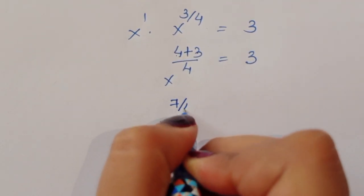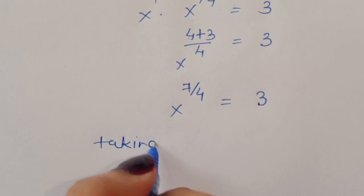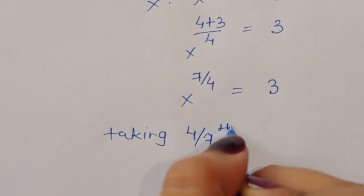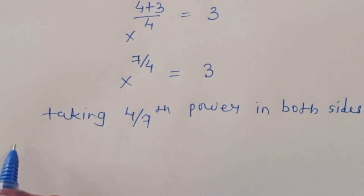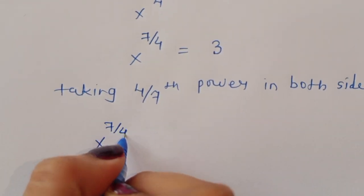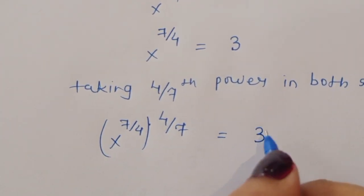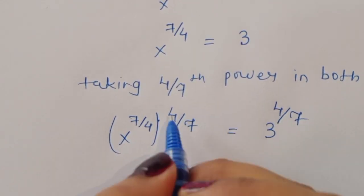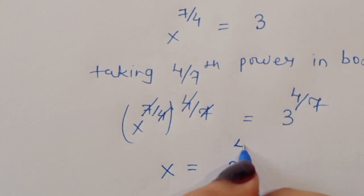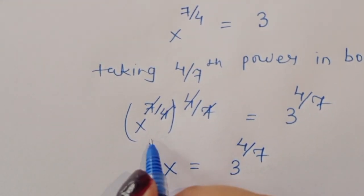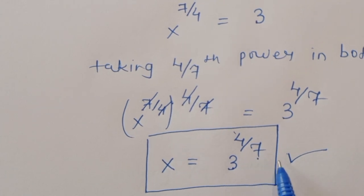Taking LCM: 4 plus 3 over 4 gives x power 7 by 4 is equal to 3. Now taking 4 by 7 power on both sides, x power 7 by 4 times 4 by 7 equals 3 power 4 by 7. The 7 and 4 cancel, giving x is equal to 3 power 4 by 7. In the second method we also get the same answer. This is the solution.